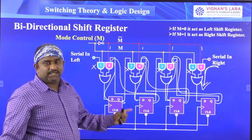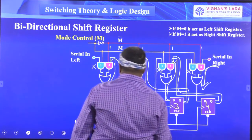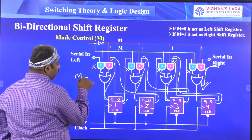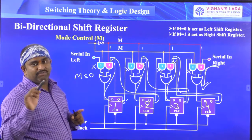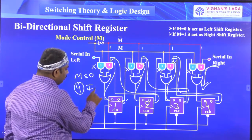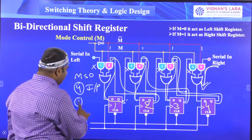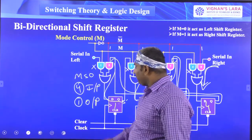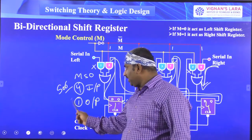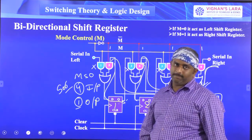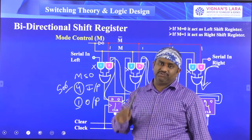This output connects to the first flip-flop, second flip-flop, third flip-flop, and fourth flip-flop in sequence. When M is equal to 0, you give input at the fourth flip-flop as serial-in data, and collect the serial-out at the first flip-flop output. The data moves from right to left, which is why this is called the left shift register.